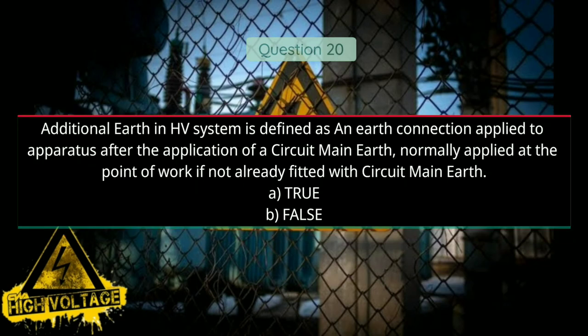Question number twenty: Additional earth in high voltage system is defined as an earth connection applied to apparatus after the application of a circuit main earth, normally applied at the point of work if not already fitted with circuit main earth. Option A: true, Option B: false. Answer will be A, true.